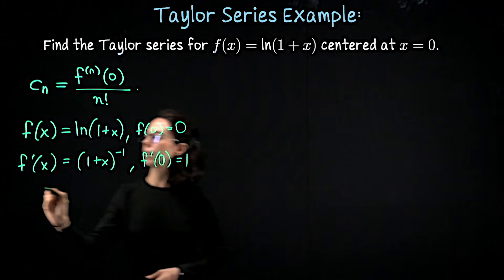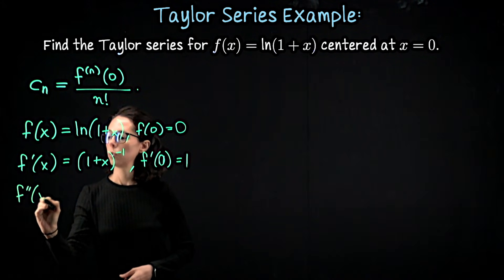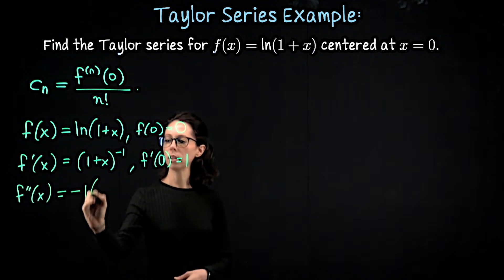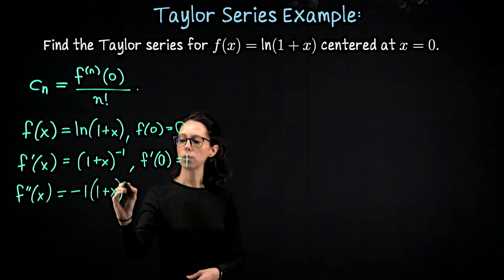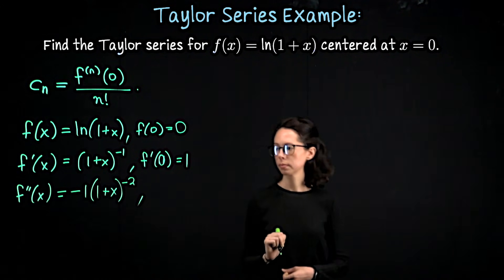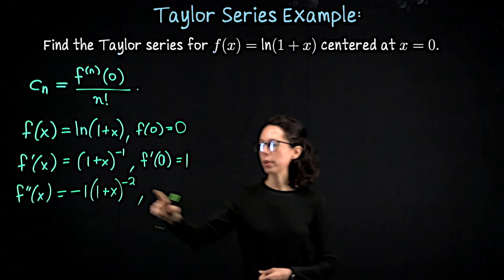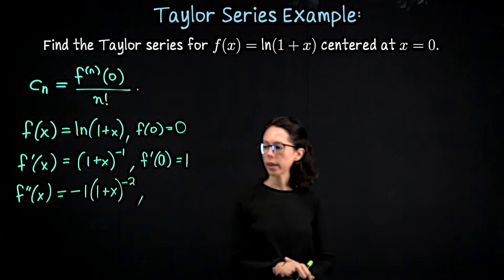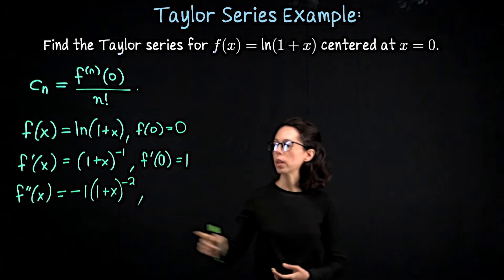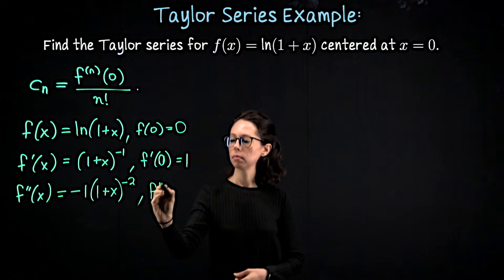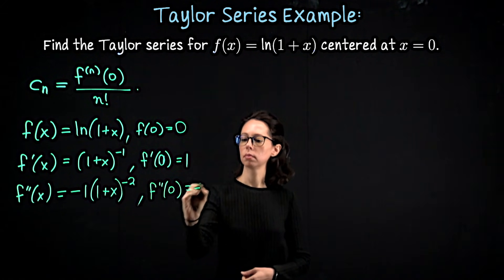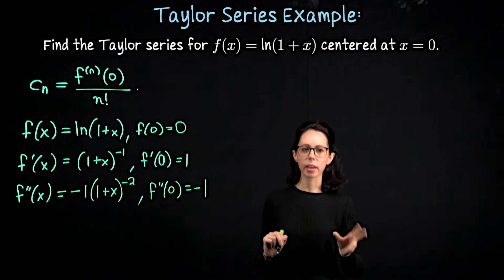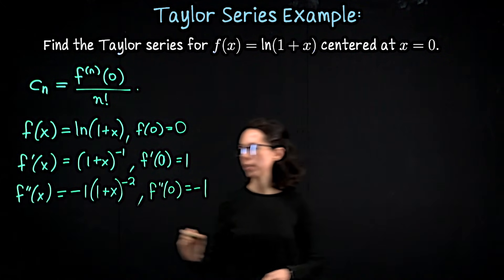Take the second derivative with the power rule. That's going to be negative 1 times (1 + x) to the negative 2. When I plug in x equals 0, again this whole part here becomes 1. So 1 plus 0 squared, 1 over that, so we're left with just negative 1. Let's keep going a couple more times. So let's take the third derivative.